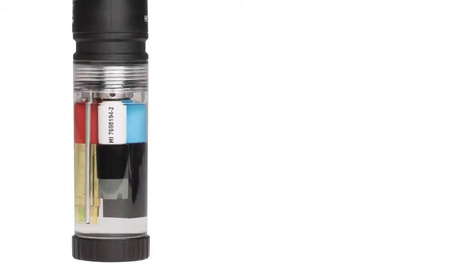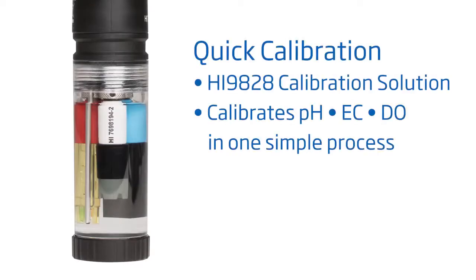Calibration is an important step to ensure the most accurate measurements. We recommend calibrating before each use. Although you can calibrate each sensor individually, in this video, we'll do a quick calibration. Quick calibration is a great way to calibrate for pH, EC, and DO all with one process.